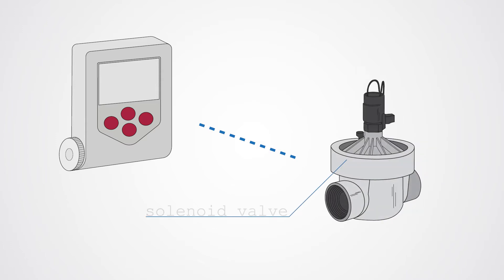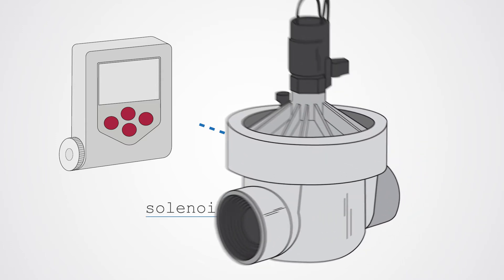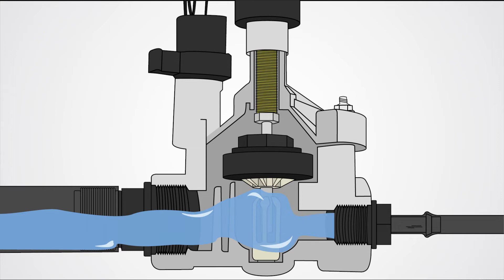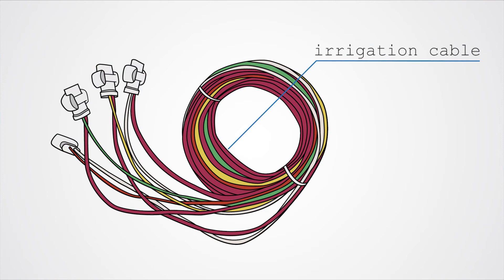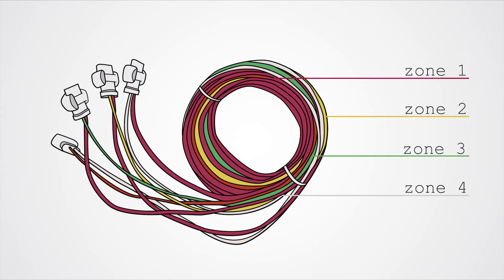The controller talks to the solenoid valves. They act like doors to let the water flow into the system. To connect the controller to the valves, you may need irrigation cable. It comes in different colors for programming multiple zones.